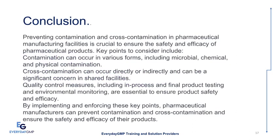In conclusion, preventing contamination and cross-contamination in pharmaceutical manufacturing facilities is crucial to ensure the safety and efficacy of pharmaceutical products. Key points to consider include: contamination can occur in various forms, including microbial, chemical, and physical contamination. Cross-contamination can occur directly or indirectly and can be a significant concern in shared facilities. Quality control measures, including in-process and final product testing and environmental monitoring, are essential to ensure product safety and efficacy. By implementing and enforcing these key points, pharmaceutical manufacturers can prevent contamination and cross-contamination and ensure the safety and efficacy of their products.